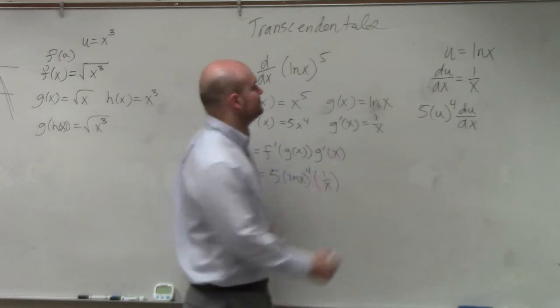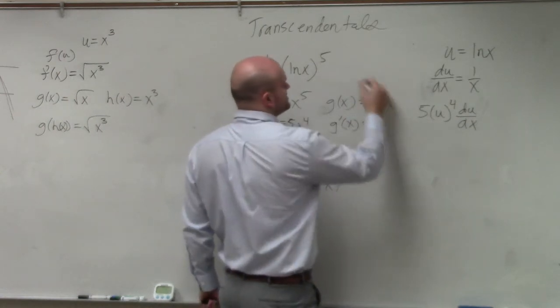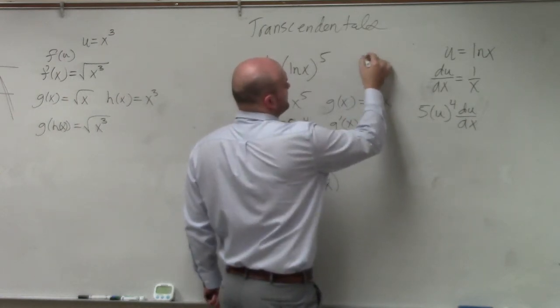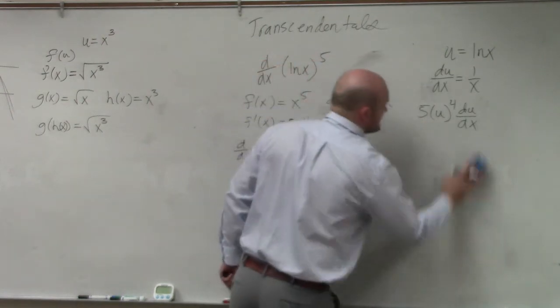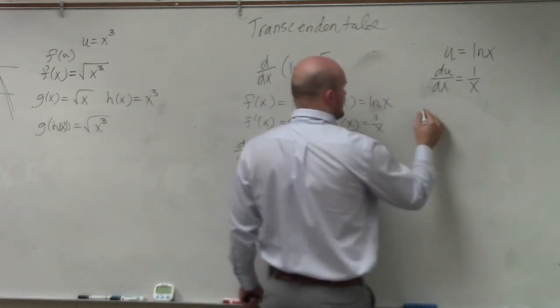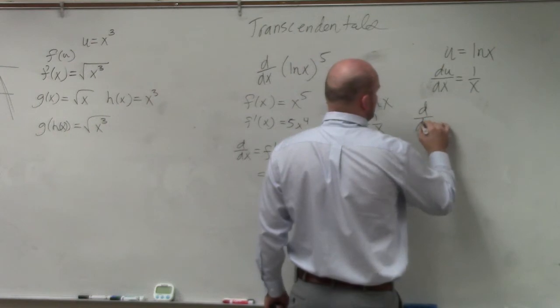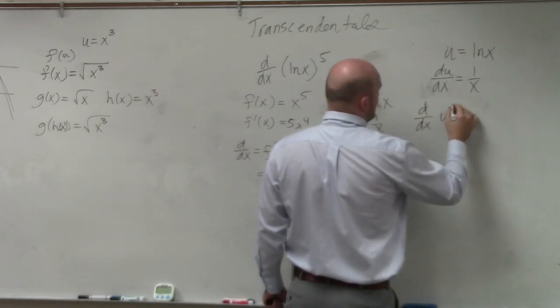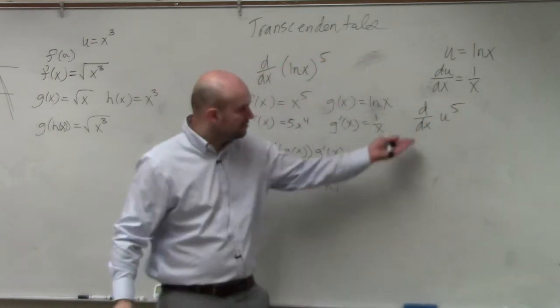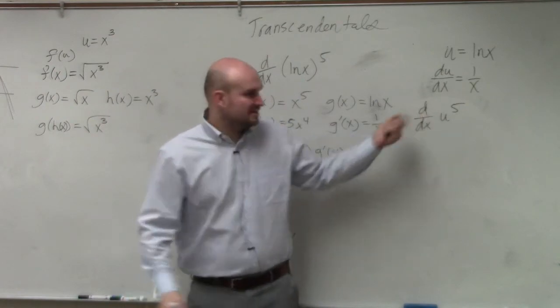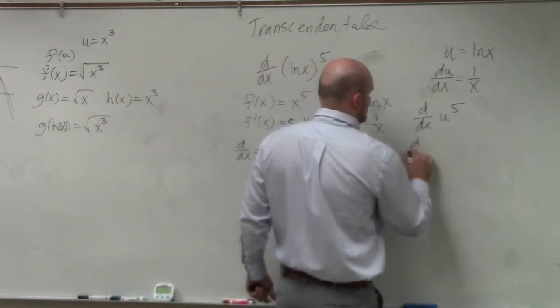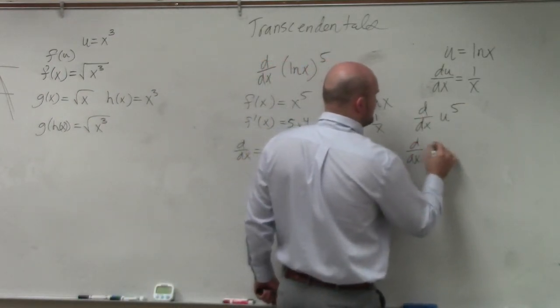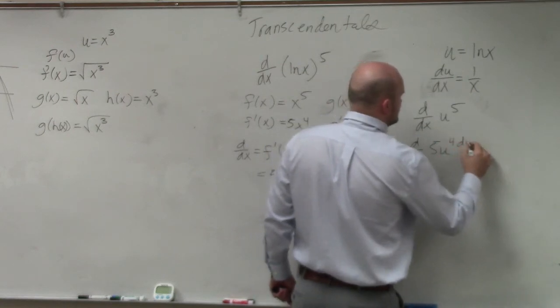So if you were to look at d/dx of u to the fifth power, we talked about implicitly deriving this. That would be d/dx is equal to 5u to the fourth du/dx, right?